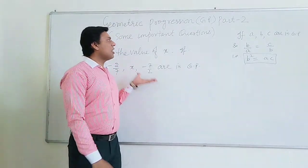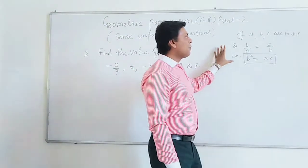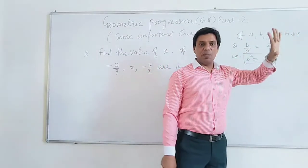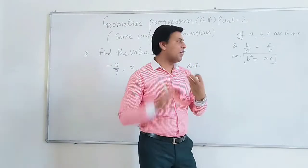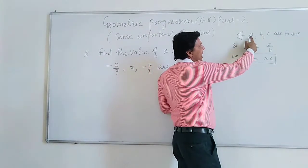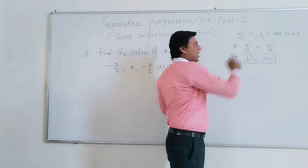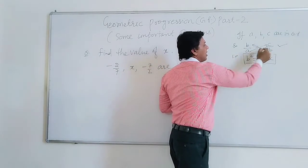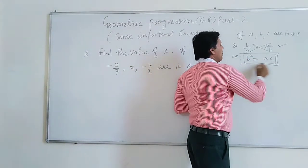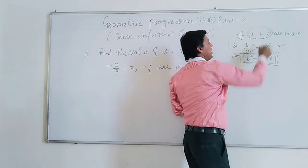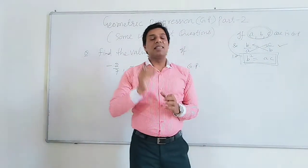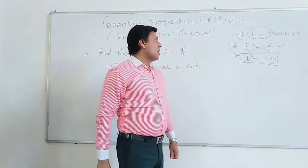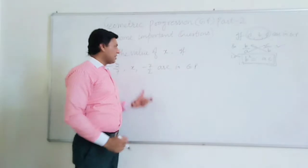Before going to the questions, I want to show you an important situation in GP. If A, B, C are in GP — that is, if we have 3 terms in GP — then the ratio B upon A will be equal to C upon B. If I cross-multiply, that gives B squared equal to AC. This is a very important situation: if 3 terms are in GP, then the square of the middle term will equal the product of the extreme terms.